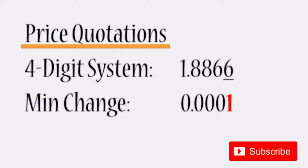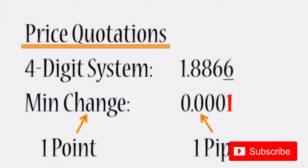The minimum change is always called one point, and this value, 0.0001, is called one pip. That's important to keep these things in your mind separately: the minimum change is one point, and one pip is 0.0001. So in this case, the minimum change is equal to 0.0001.